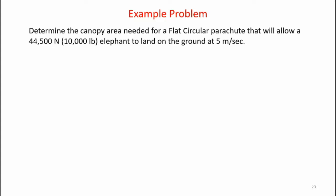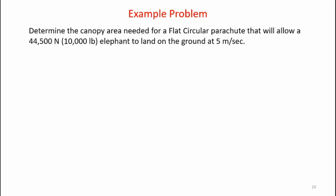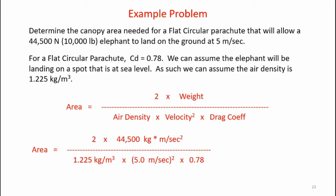Let's take a look at an example design problem. We want to determine the canopy area needed for a flat circular parachute that will allow a 44,500-newton elephant to land on the ground at five meters per second. For a flat circular parachute, the CD is 0.78, and we assume the elephant will land at sea level, so air density is 1.225 kilograms per cubic meter. Inserting our values, the required area comes out to 3,725 square meters. That translates into a parachute with a diameter of 34.4 meters — a pretty large parachute.